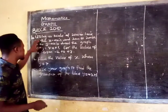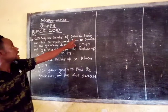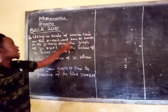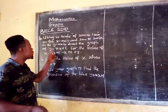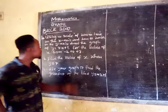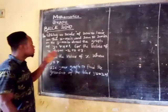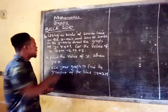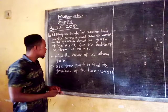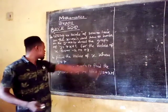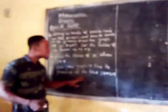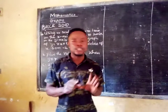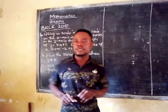The first question we are answering says: using a scale of two centimeters to one unit on the x-axis and two centimeters to two units on the y-axis, draw the graph of y equals 4x plus 1. Find the value of x from minus 2 to plus 8. Part B: find the value of x when y equals 7. Part C: use your graph to find the gradient of the line y equals 4x plus 1.